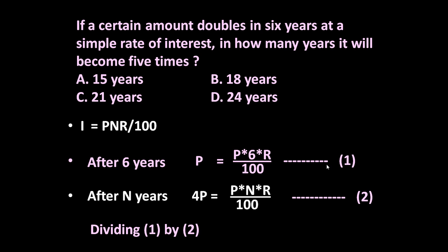Now if we divide equation number 1 by equation number 2, we get the P, P will cancel everywhere. RR will cancel. We will get N is equal to 24. So after 24 years the amount will become 5 times.